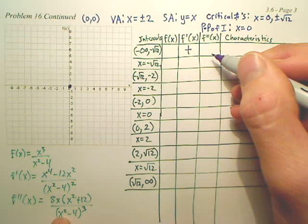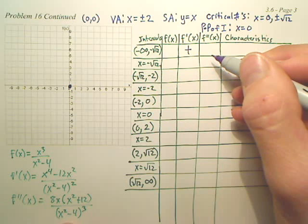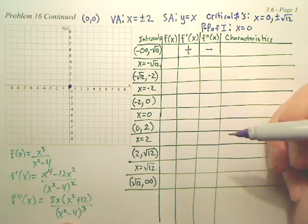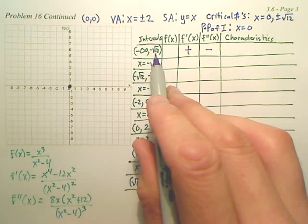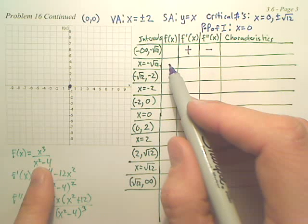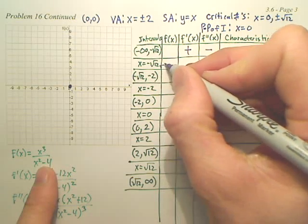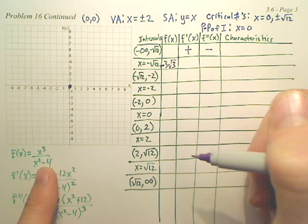When I plug negative four into the second derivative, that 8x term is going to be negative, x squared plus 12 will become positive, and then the bottom won't that be positive? So you have a negative times a positive over a positive — isn't that going to be negative? When we plug in negative square root 12 into the original, the answer is negative 3 square root 3, or negative square root 27.